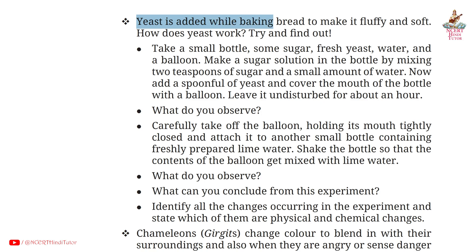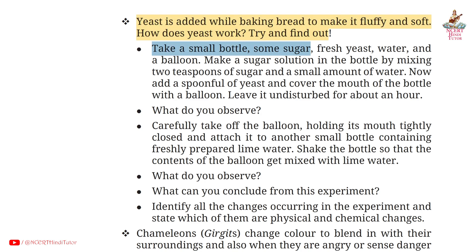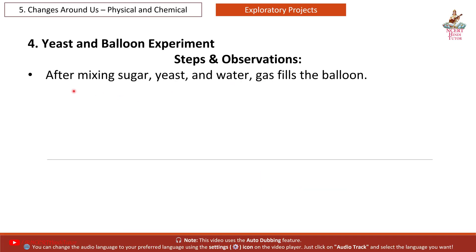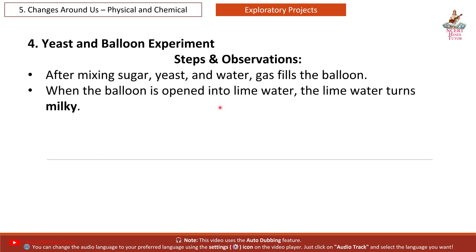Yeast is added while baking bread to make it fluffy and soft. How does yeast work? Take a small bottle, some sugar, fresh yeast, water and a balloon. Make a sugar solution by mixing two teaspoons of sugar and a small amount of water. Add a spoonful of yeast and cover the mouth of the bottle with a balloon. Leave it undisturbed for about an hour. Observation: After mixing sugar, yeast and water, gas fills the balloon. When the balloon is opened into lime water, the lime water turns milky.